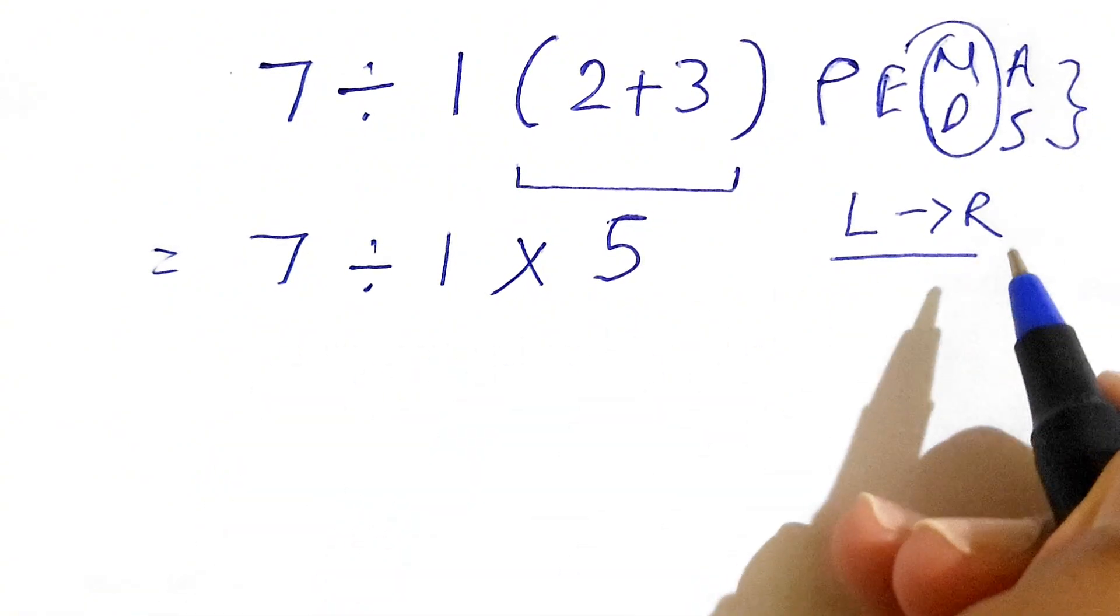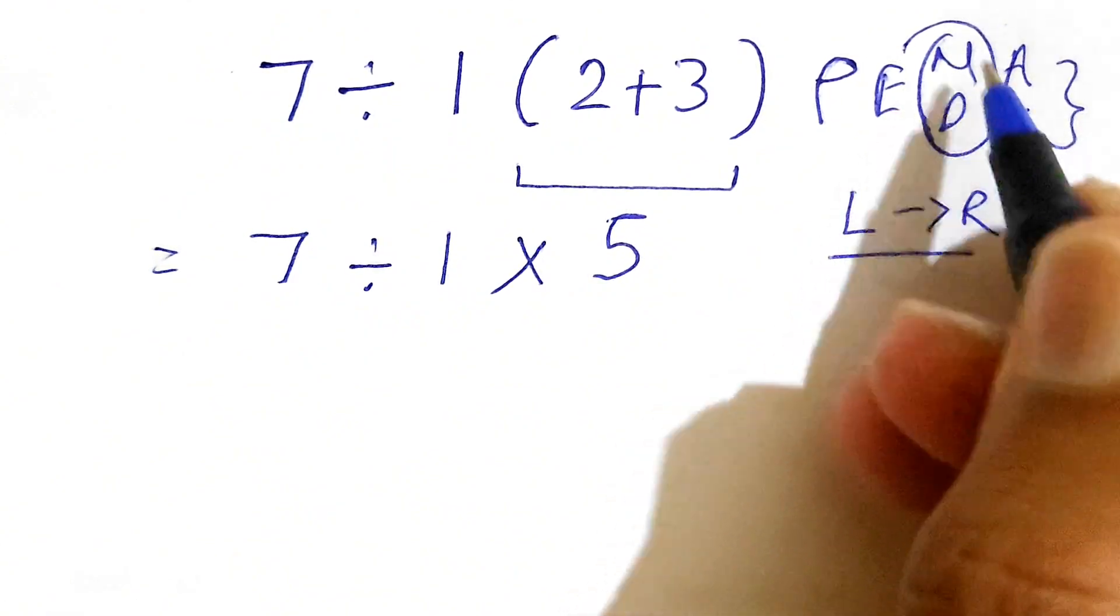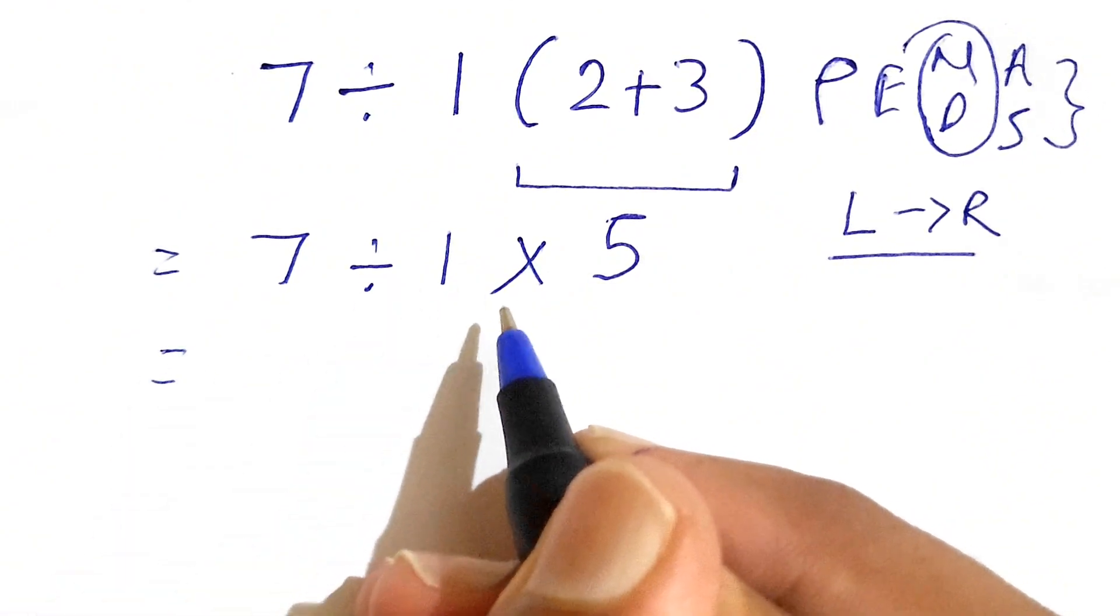Now, as we have discussed, we need to go from left to right because the priority of multiplication and division is the same. First, we need to solve this division instead of this multiplication.